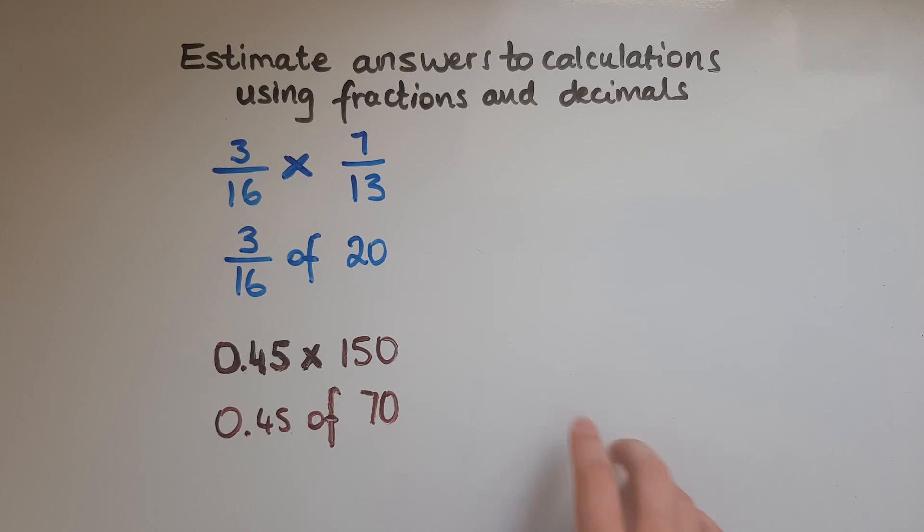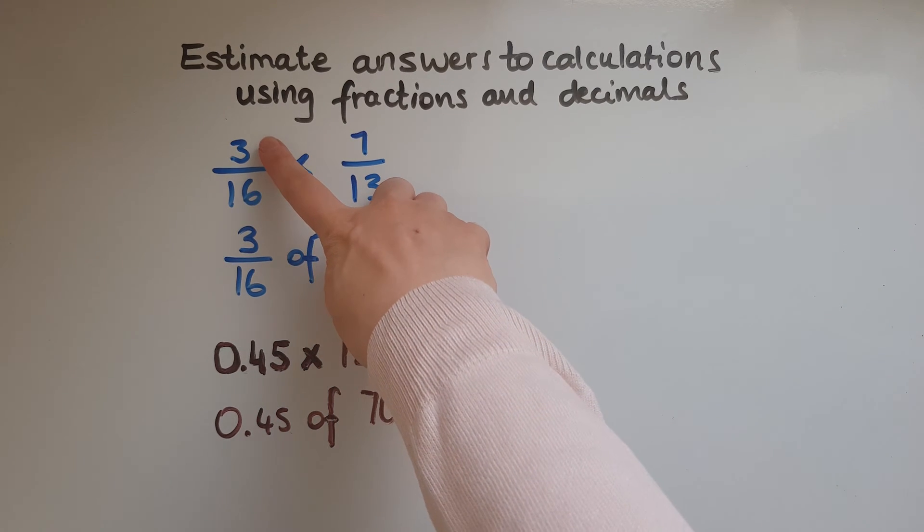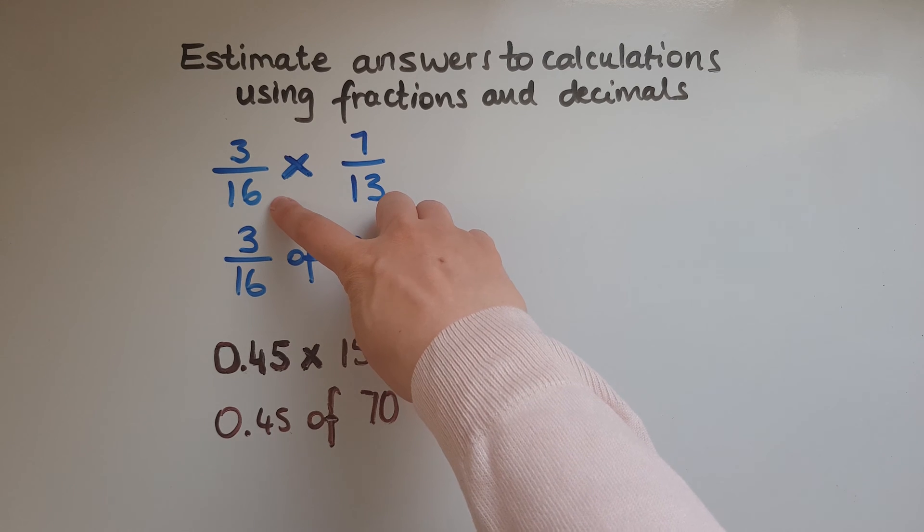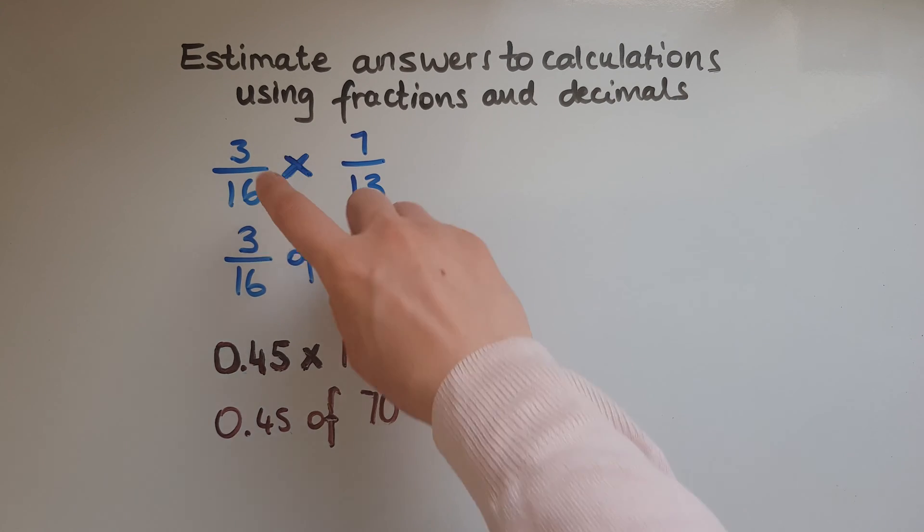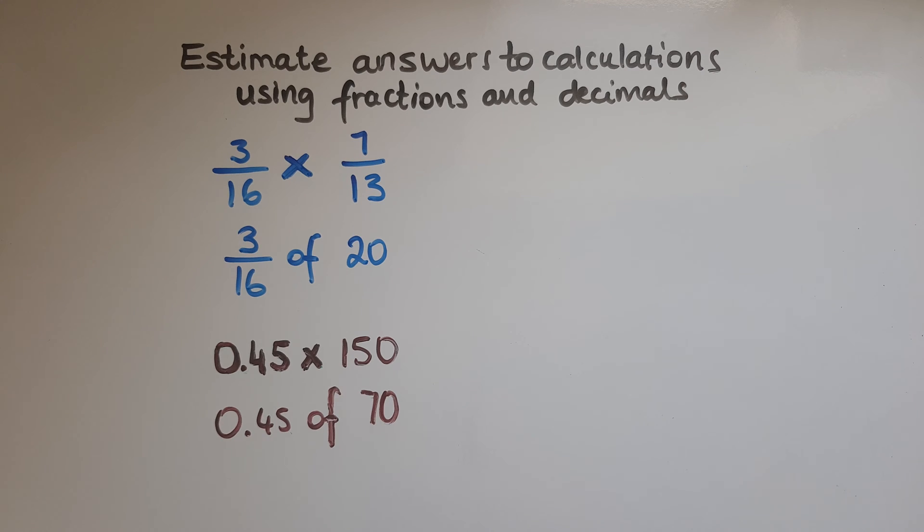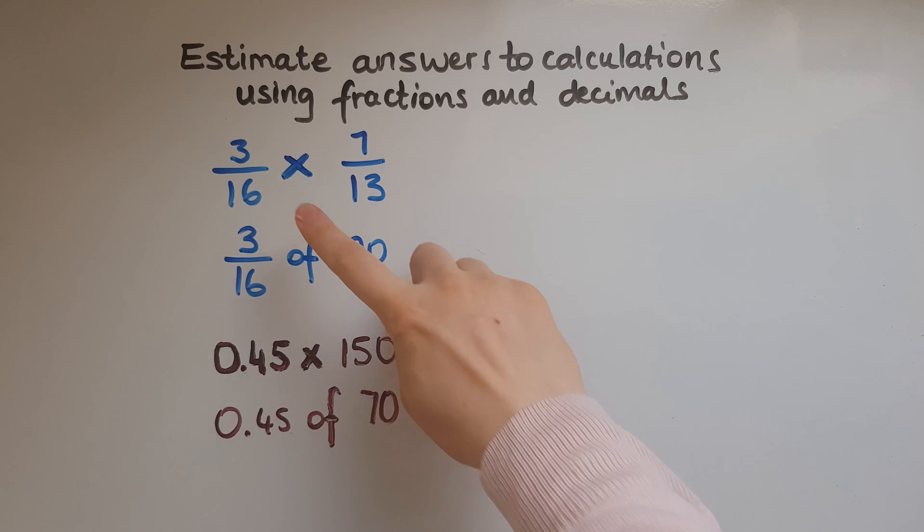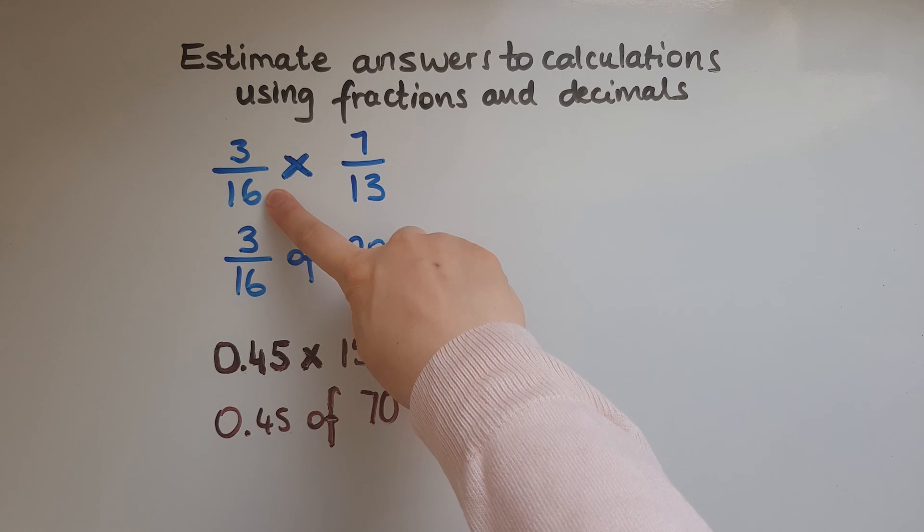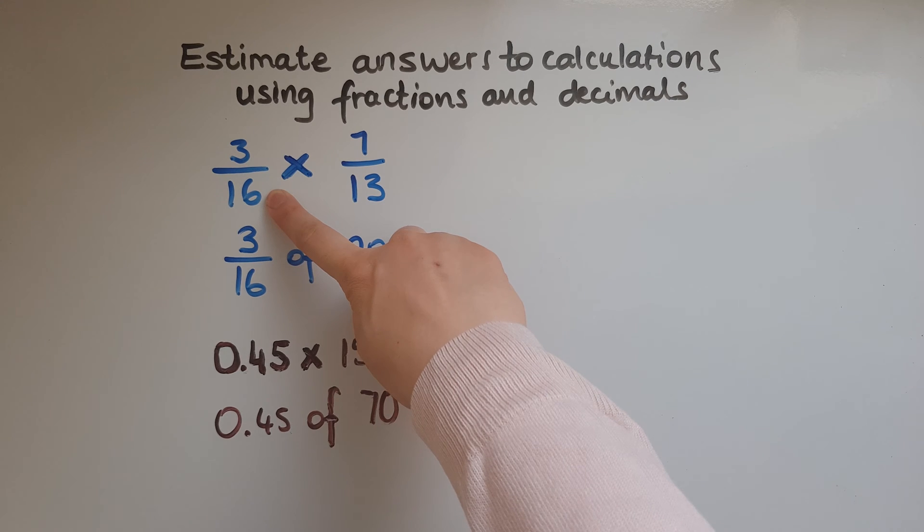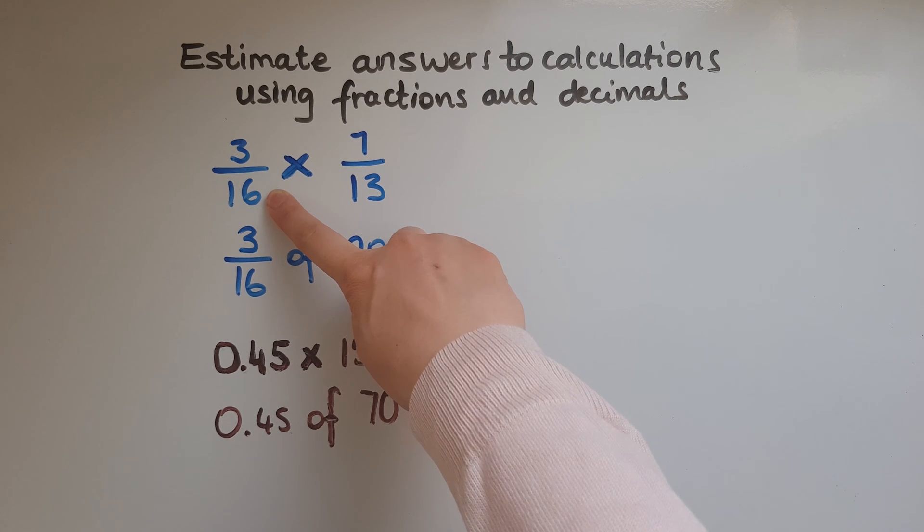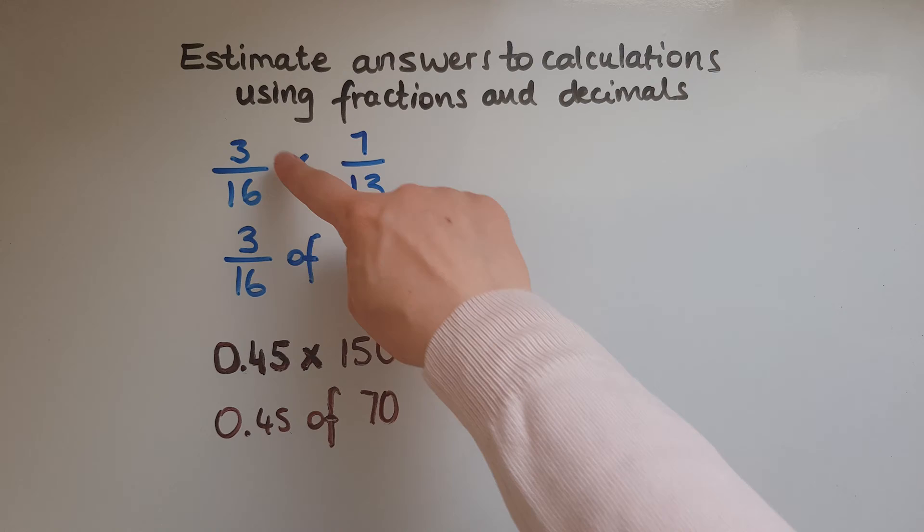So what I'm going to do, I'll look at the numbers and it is 3 out of 16. So I know that if I split 16 into 4 equal parts or I get a quarter of it, I'd have 4. So 4 out of 16 is 1 quarter.